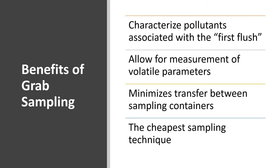Third, some pollutants such as oil and grease and total petroleum hydrocarbons tend to adhere to sample container surfaces, so that transfer between sampling containers must be minimized. Finally, grab sampling is the cheapest method for collecting a water quality sample. However, it is worth repeating that it is generally not sufficient to develop a reliable estimate of the event mean concentration.